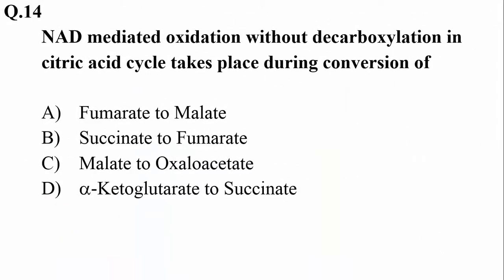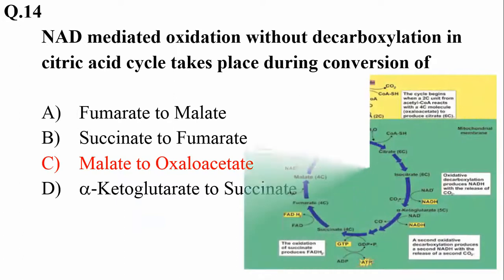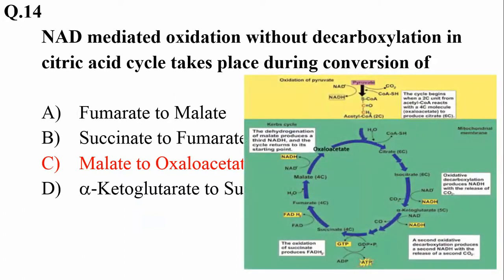NAD-mediated oxidation without decarboxylation takes place during the citric acid cycle at the conversion of malate to oxaloacetate, because at other stages CO2 is also released. This is the stage during which NADH is formed without release of CO2, whereas wherever else during the Krebs cycle NADH is formed, CO2 is also being released at those stages.